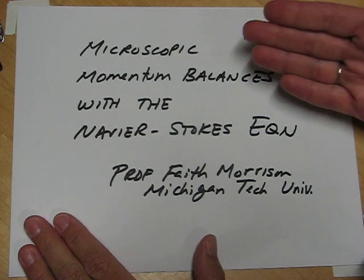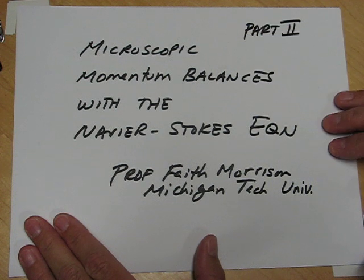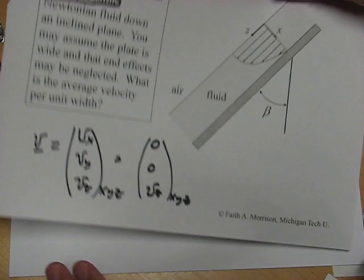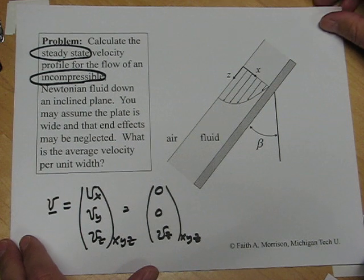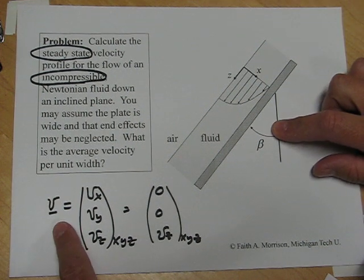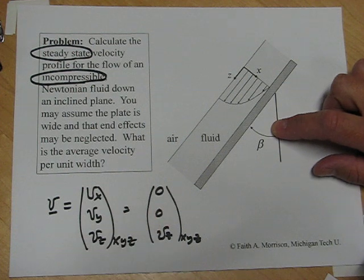I'm working out a problem using the microscopic momentum balance to solve for a velocity field. In part one of this video, we started to consider the flow down an incline plane of an incompressible Newtonian fluid, where the velocity vector is taken to be fully in the z direction.